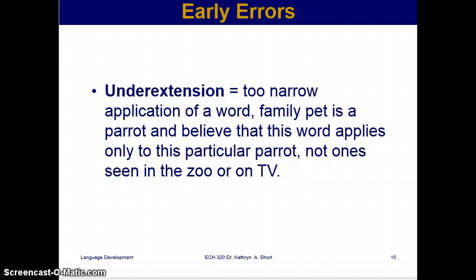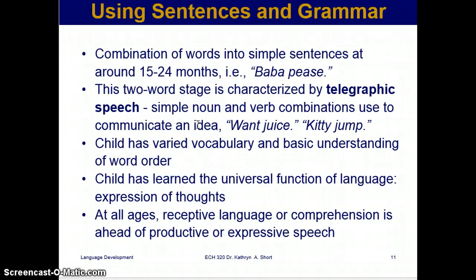Under-extension is the opposite — too narrow an application of a word. For example, if the family pet is a parrot, the child may believe the word 'parrot' applies only to that specific parrot, not to one seen on TV or at the zoo. He only understands 'parrot' as his own pet. Now we move on to sentences and grammar, which will be covered in the next video.